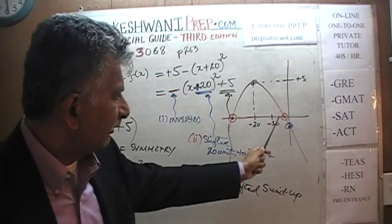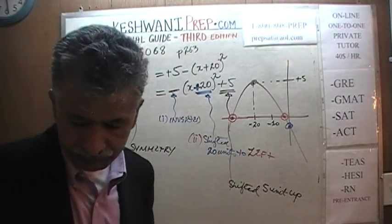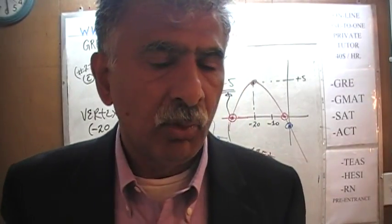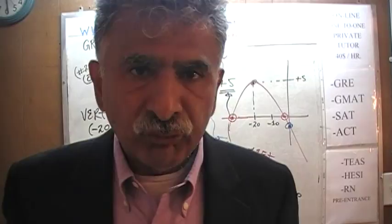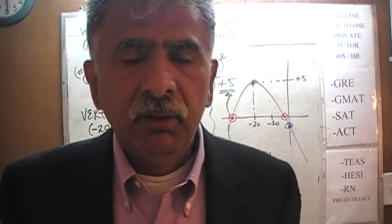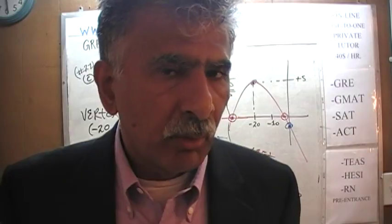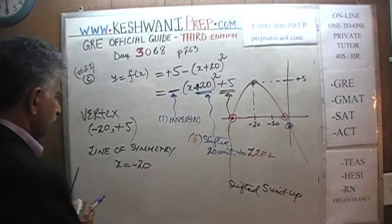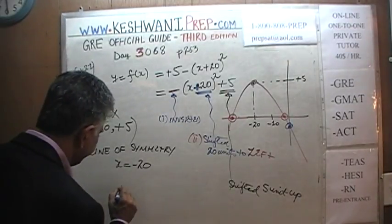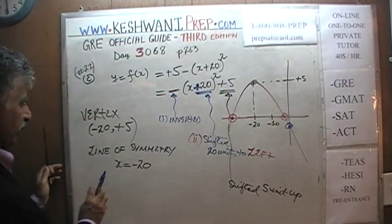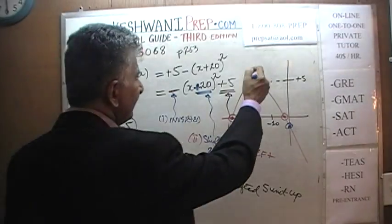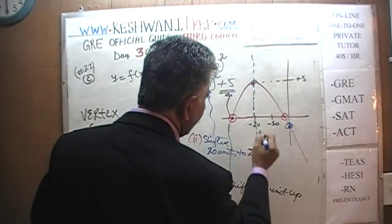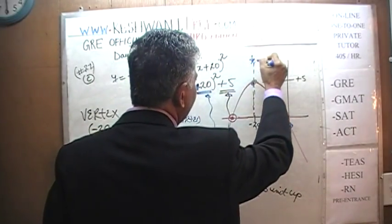Let's find the x-intercepts, which is the same as finding the solution to this quadratic equation. As always, we have three choices: we can factorize, use completing the square, or use the quadratic formula. The line of symmetry is right here — x equals negative 20 — because the parabola is symmetric around that line, and those are the coordinates of the vertex: (−20, 5).